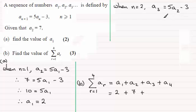So that's going to be equal to 5 times a2, which was 7, 5 times 7 minus 3. And that comes to 35 minus 3, which is 32.